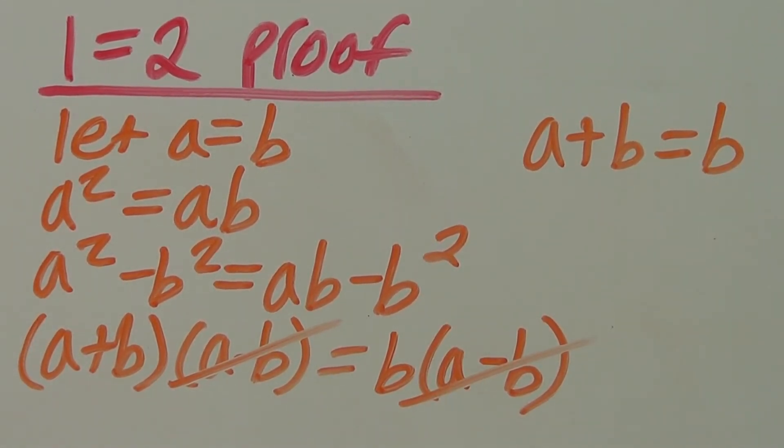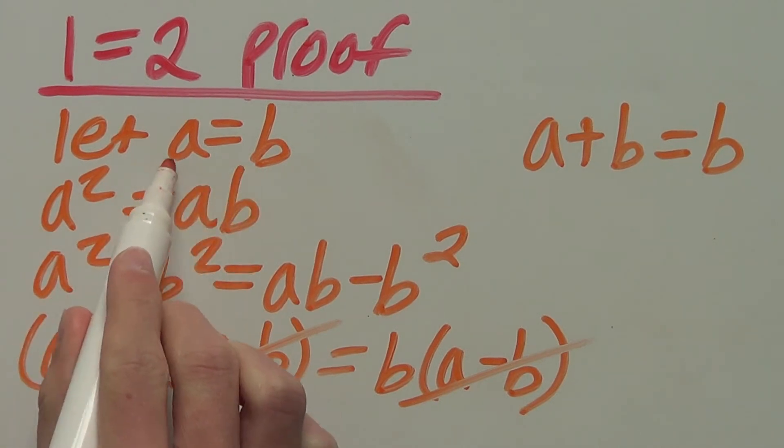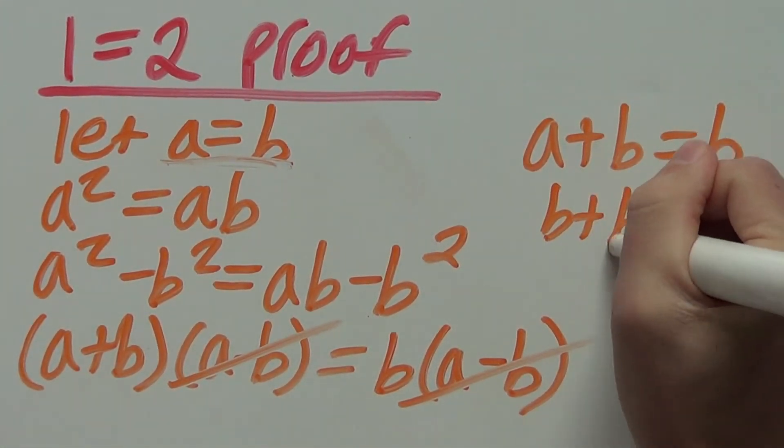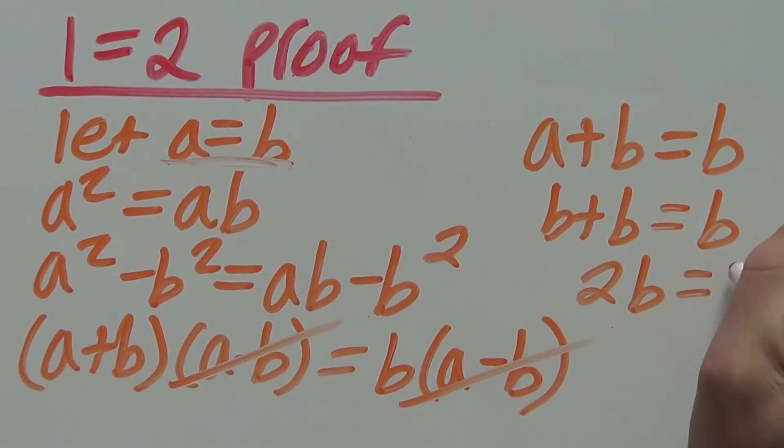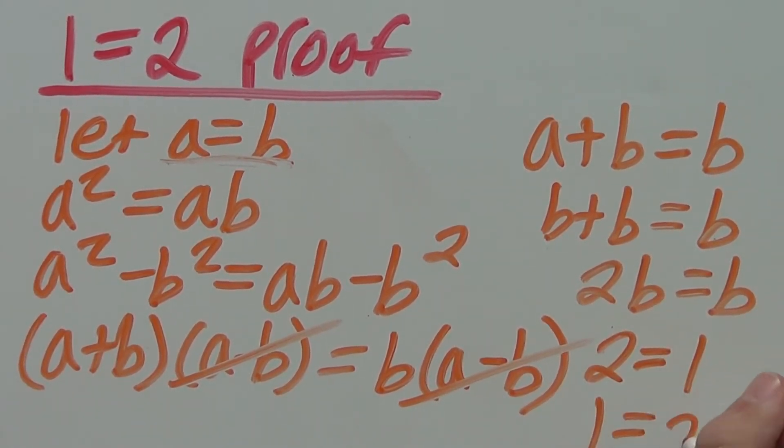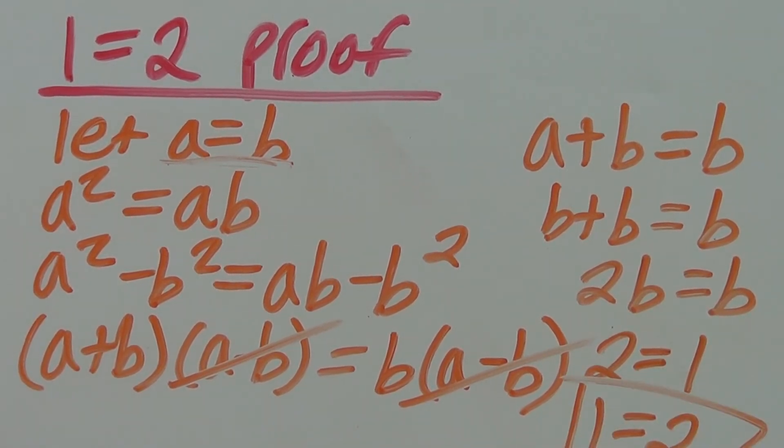And since a and b are the same number, that is the same as b plus b equals b or 2b equals b. And if we divide both sides by b we're left with 2 equals 1 or 1 equals 2. And I just proved to you how 1 equals 2.